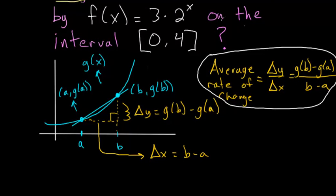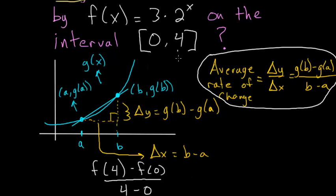the average rate of change of f(x) on this interval is just the function evaluated at 4 minus the function evaluated at 0 divided by 4 minus 0. Since in this formula, we essentially called 4 b and 0 a.